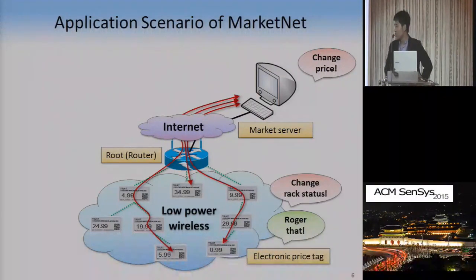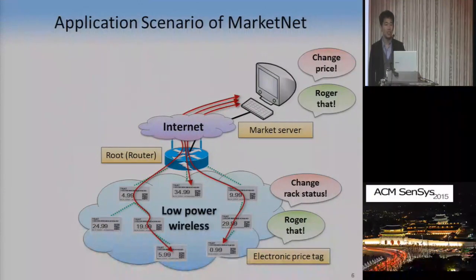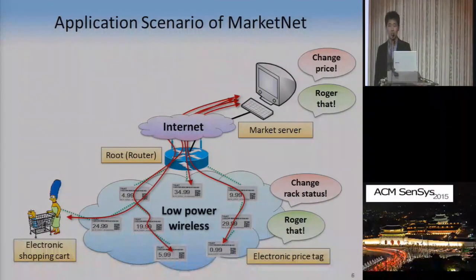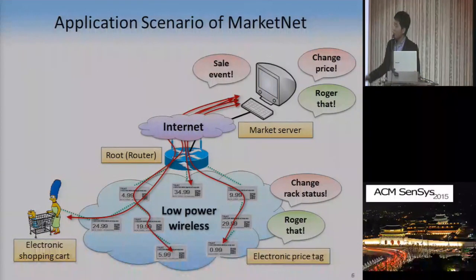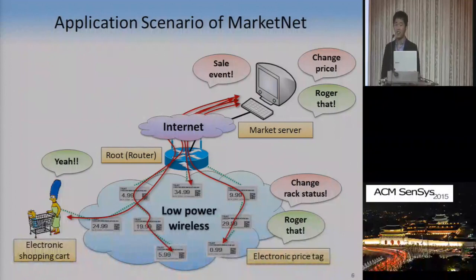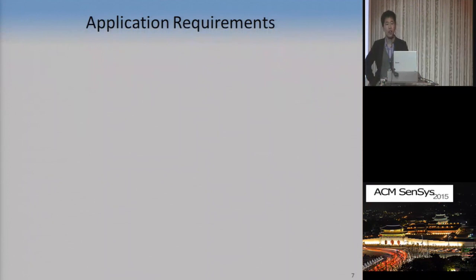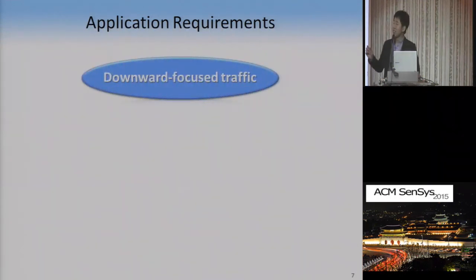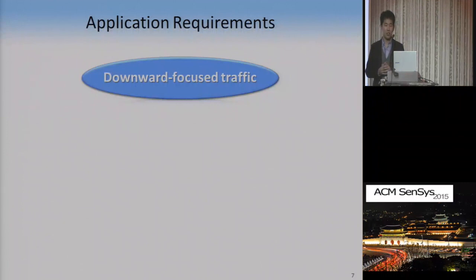Moreover, we can envision that each e-price tag senses the rack status and reports this information to the server remotely. Based on MarketNet, we can also enable additional applications such as shopping carts with electronic screens. For example, the server can inform customers of important sale events and attract them. To support this application, our MarketNet needs to fulfill some requirements. First, unlike many wireless sensing systems deployed so far, our MarketNet should deliver downward-focused traffic from the server to the e-price tags, because price updating information is the main source of data.